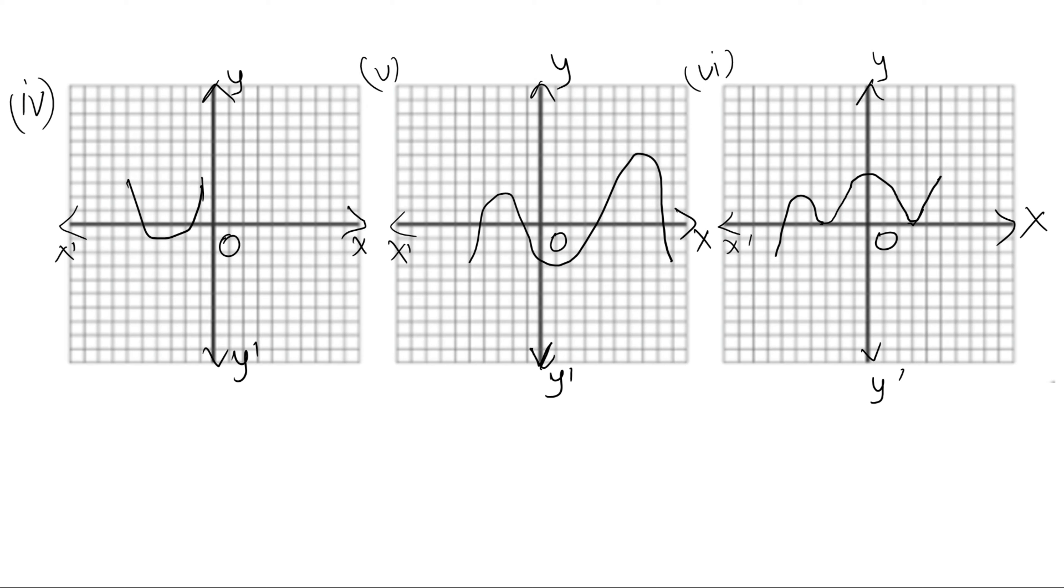Coming to the fourth one. Now this graph is crossing x-axis at this point and this point. That means two points of intersection, two zeros.